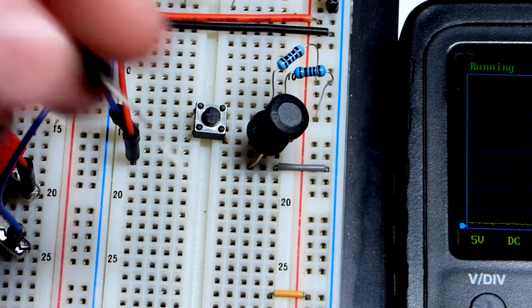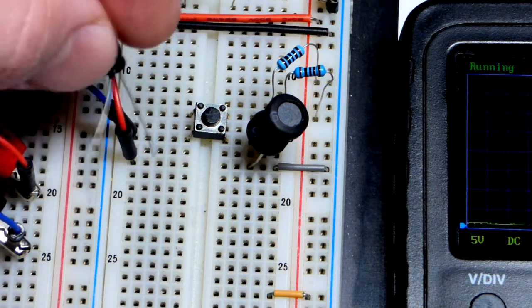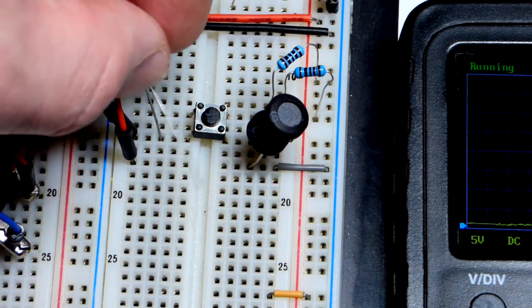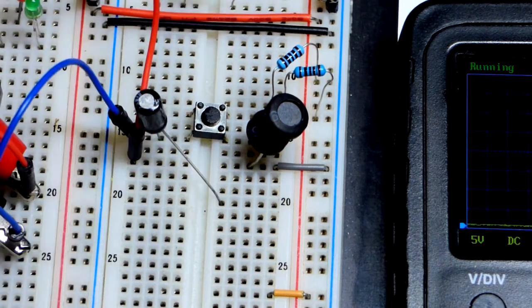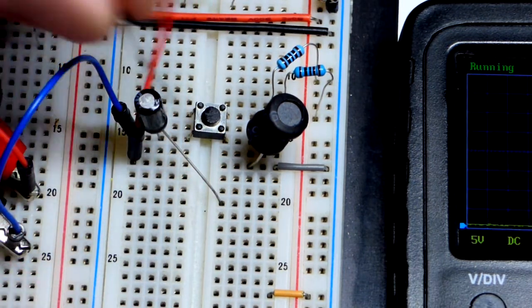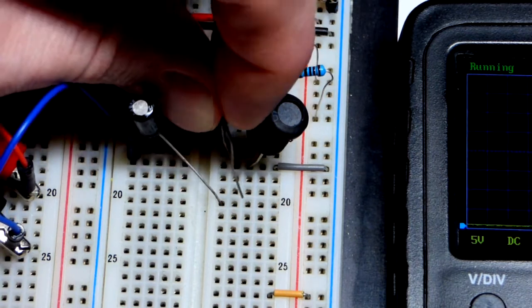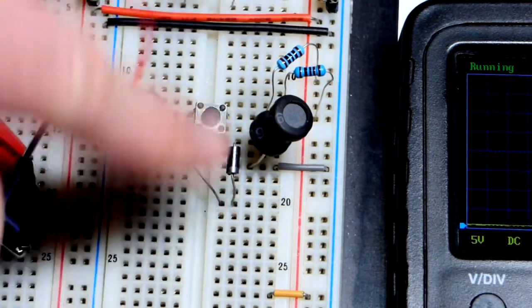Again, the positive side is going to be towards the inductor. So the negative side, the side with the dash, we're going to put to the switch. And we can come over there a few spots away. Now we'll add the diode. So the more positive side, the anode, I should say, to the inductor. And then the cathode over here.